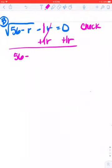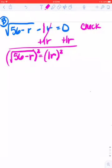So 56 minus r here, and 1 r there. Now that the square root is by itself, I'm going to square both sides. So this is 56 minus r, and 1 r squared is going to be 1 r squared.